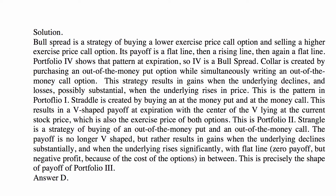A strangle is a strategy of buying an out-of-the-money put and an out-of-the-money call — a 'poor man's straddle' because it's cheaper, but you give up gains around the current price. Instead of a V-shape, you get gains only when the underlying declines or rises substantially, with a flat line of zero payoff but negative profit in between. That is precisely the shape of Portfolio 3. So the answer is D.